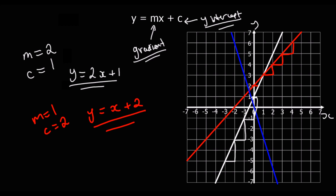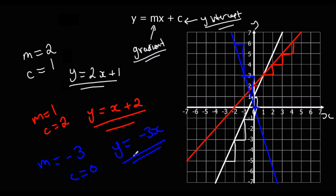And finally, the blue line. For every one it goes across, it's going down three — so it's got a gradient of minus three. And its y-intercept is at zero, so c is zero. Therefore y equals minus three x. I'm not going to write plus zero. That's the equation of the blue line.